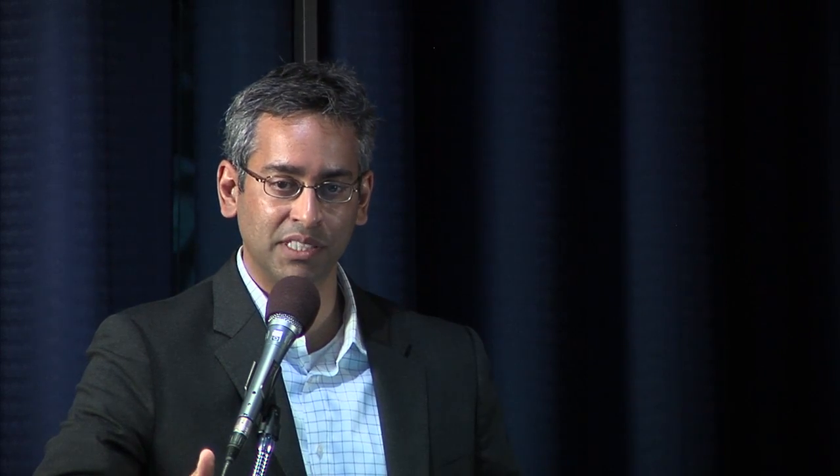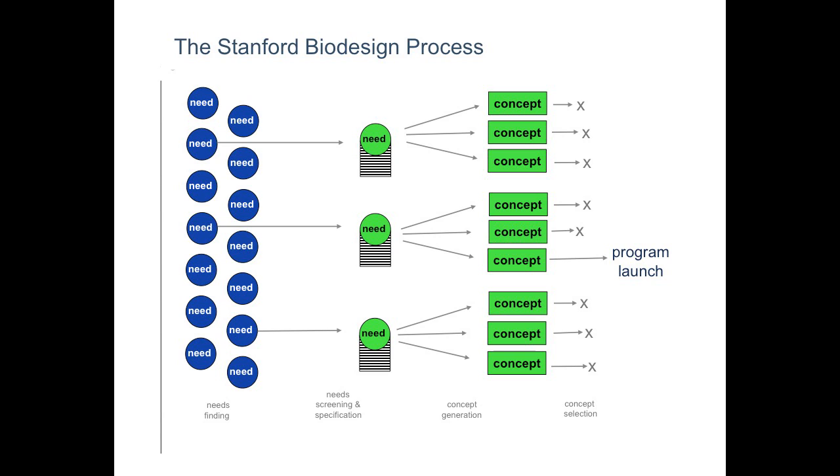Then it's screening those needs — of the 500 or 600 needs identified, which are most relevant to solve? Going through a rigorous methodology to assess which ones are most impactful and most able to be solved. Once you find those needs, you create would-be solutions, and then identify which solution is most relevant for the need you initially identified. This is what the process is not — it's not a technology looking for an application. We start with the need and then create a solution relevant for that need.